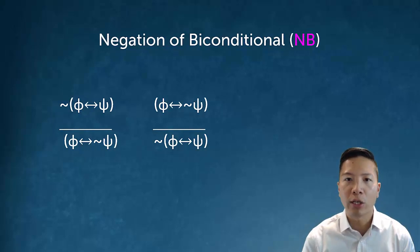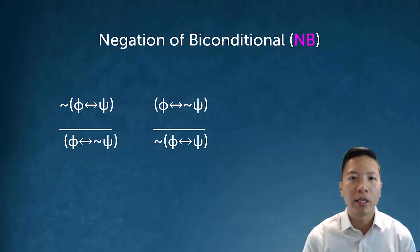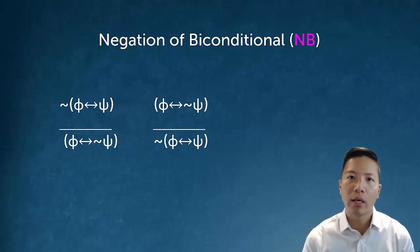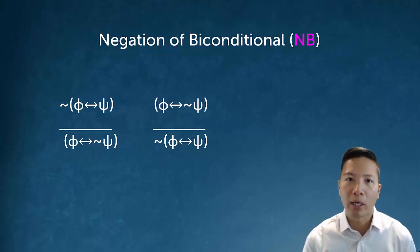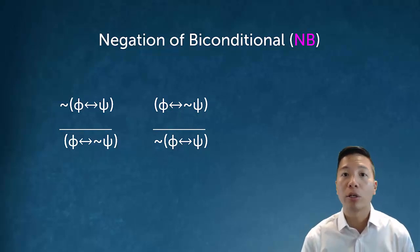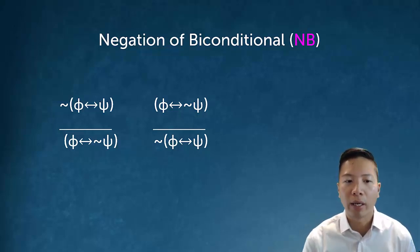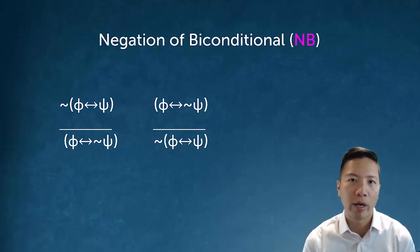Our next negation rule is negation of biconditional. It too is very straightforward: the negation of a biconditional phi bicondtional psi lets us conclude phi biconditional not psi. This makes sense because a biconditional says both sides have to have the exact same truth value. So if you have the negation of a biconditional, the sides must have opposite truth values — this is also known as exclusive or, phrased as phi biconditional not psi.